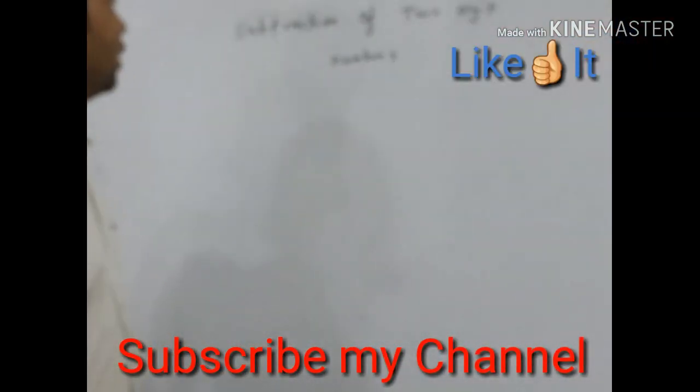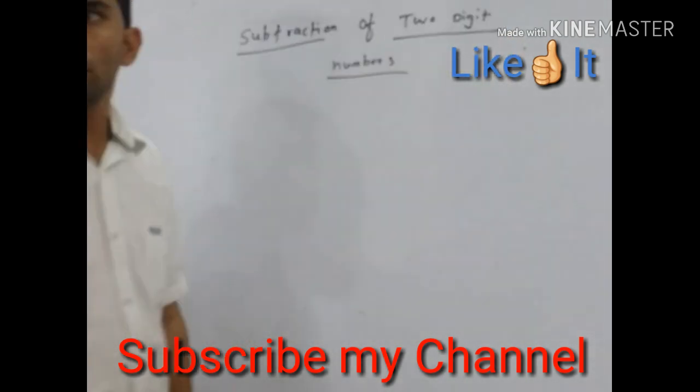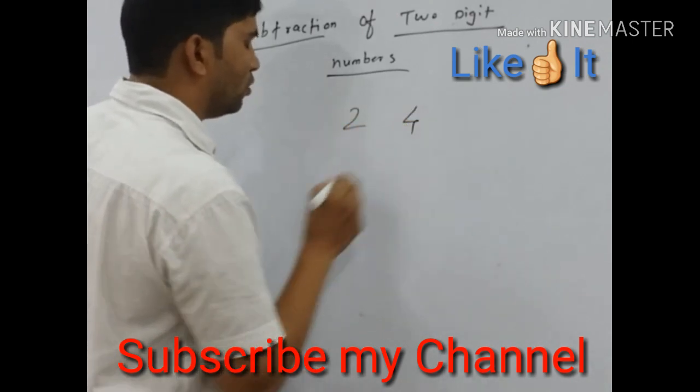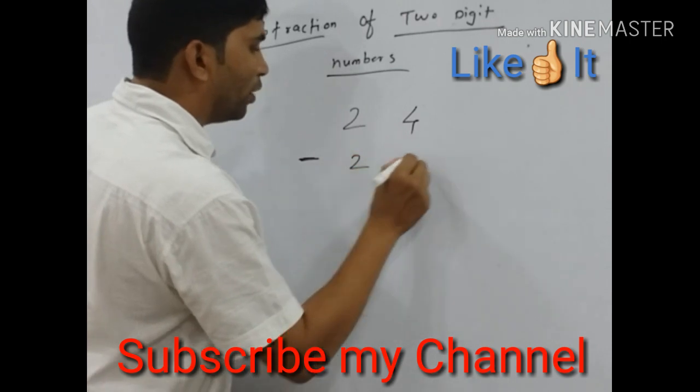Now, we will learn subtraction of two-digit numbers. We take two numbers: 24 minus 21.